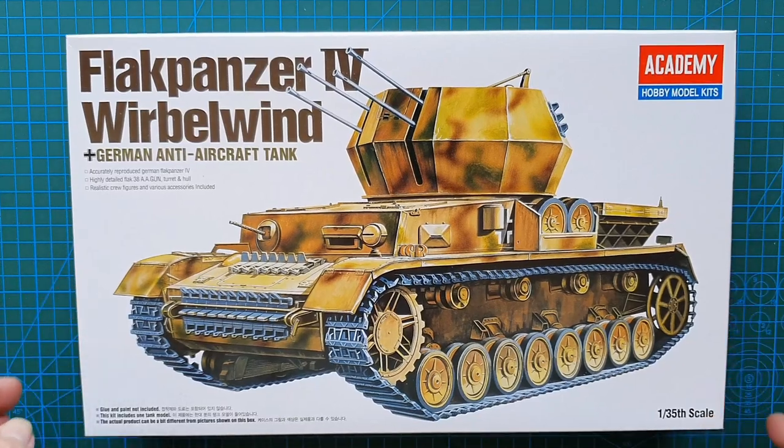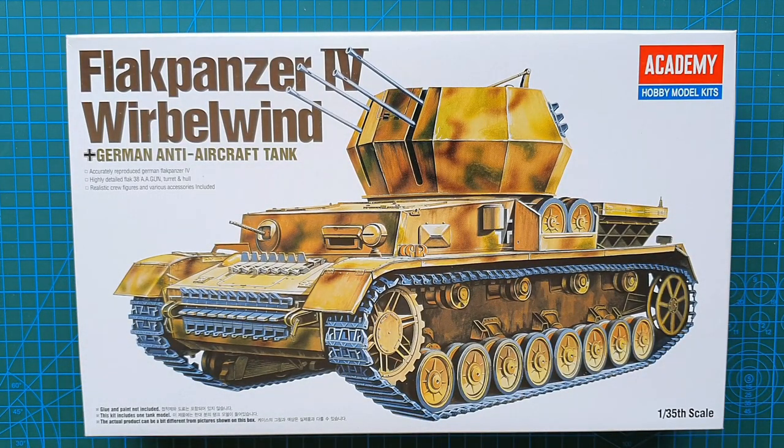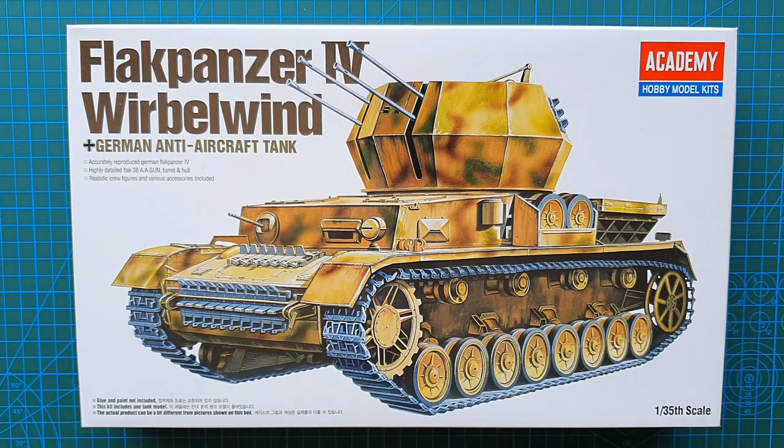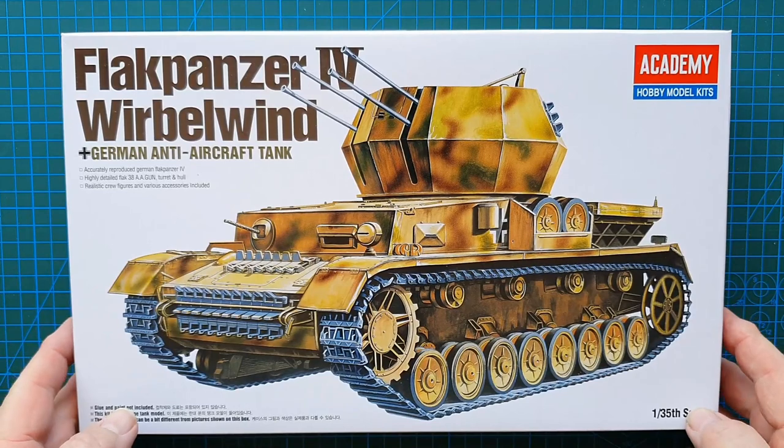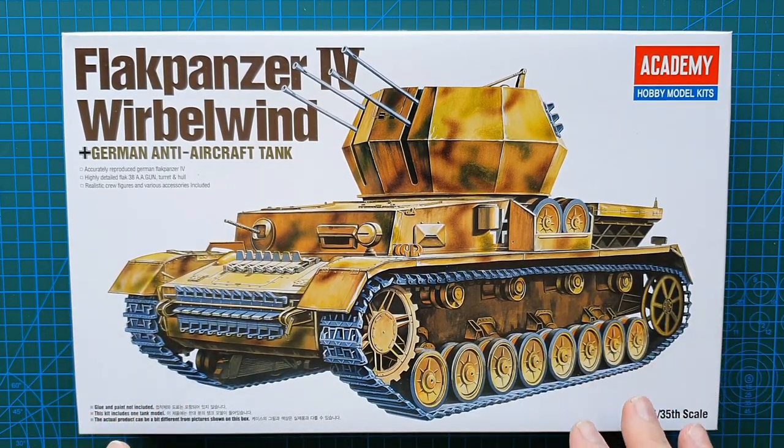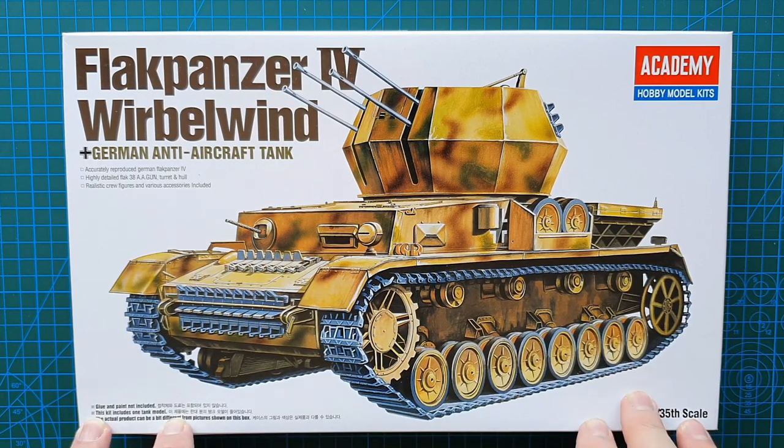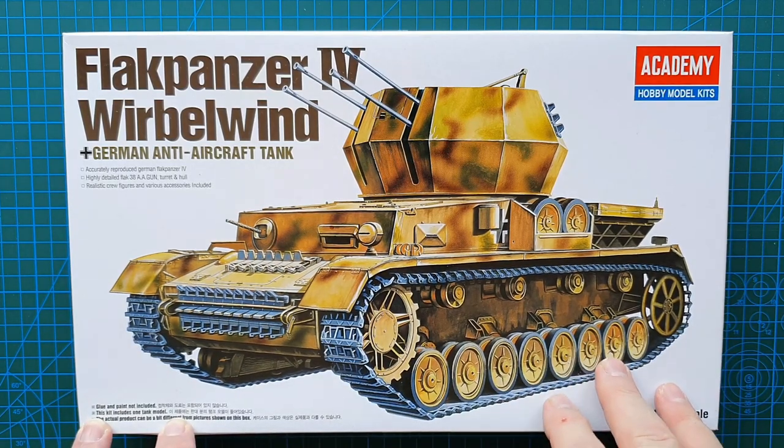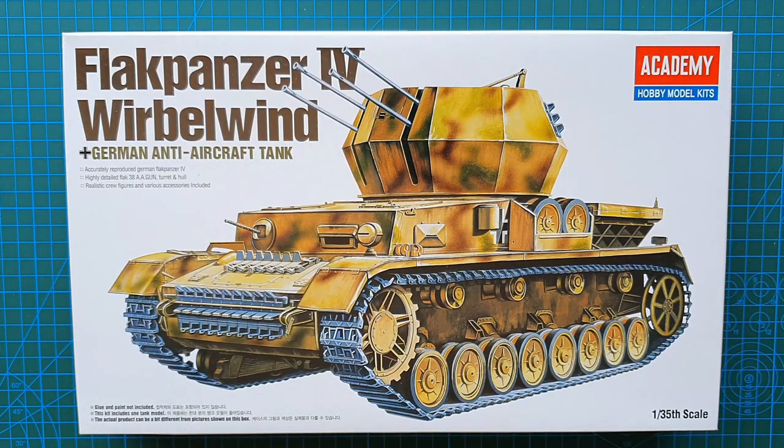So that's it guys, that is Academy's Flakpanzer IV Wirbelwind, came out in 1994, kit number 13236. A nice little kit actually if you can pick one up cheap. I don't know about paying 35-40 dollars for it plus postage, but you never know, it's entirely up to you. I think this will turn out quite nice - a nice bit of weathering on it, a bit of wear and tear and a decent paint job, I think this will be a nice looking kit. That brings us to the end of this review. Hope you've enjoyed it, thank you for your likes and your subscriptions and your comments, always appreciated. As usual, until next time guys, take it easy, stay safe, and I will see you later.